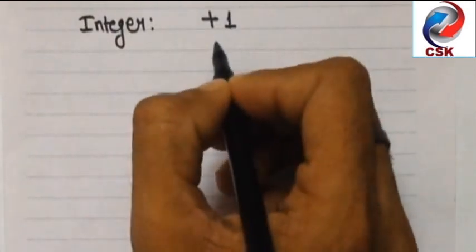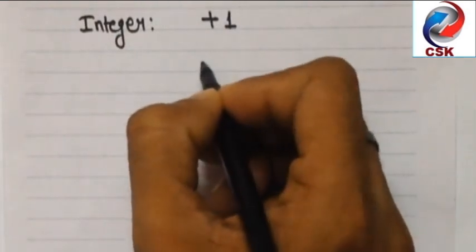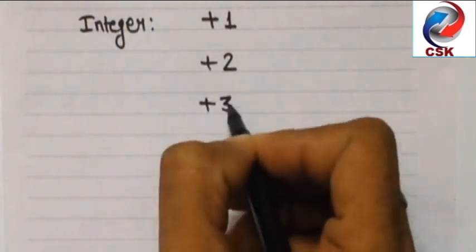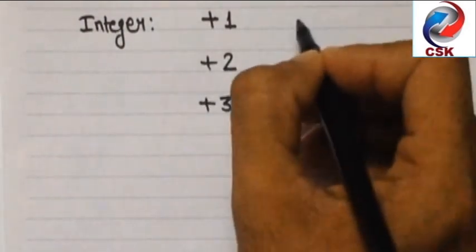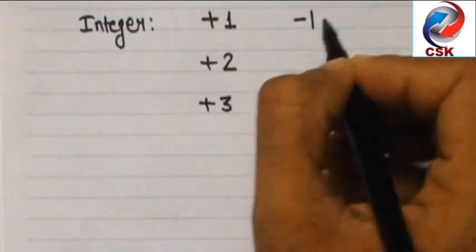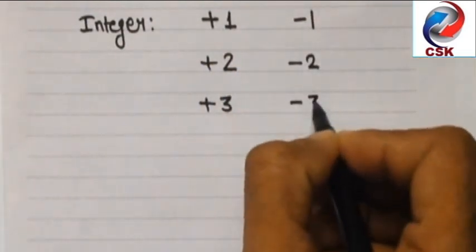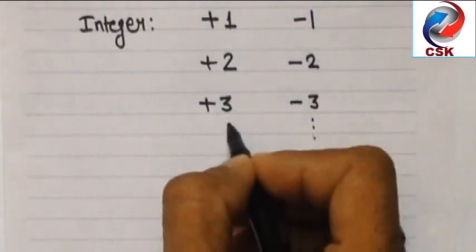Let's have a look at these examples: +1, +2, +3 - all these are complete numbers. In the same way, -1, -2, and -3, these are also complete numbers.